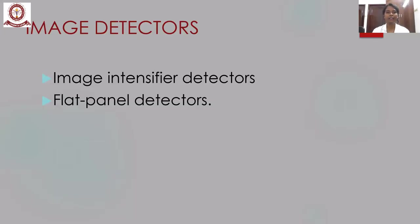The image detectors used in CBCT are image intensifier detectors and flat panel detectors. Though both are used, the most commonly used one is a flat panel detector, because image distortion is relatively less when flat panel detectors are used.